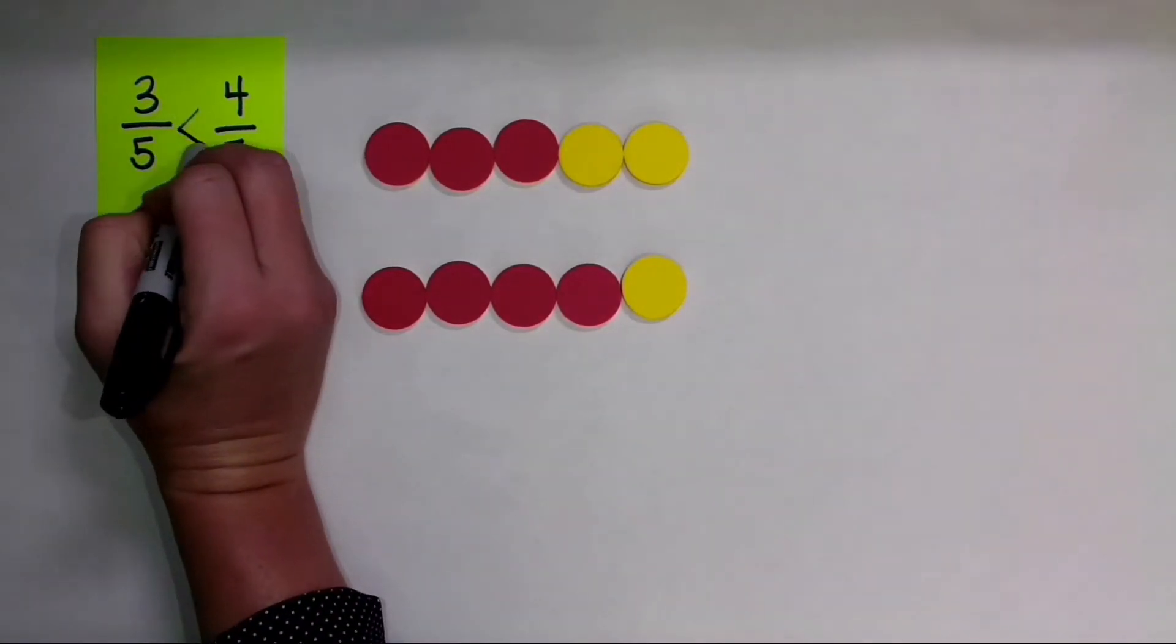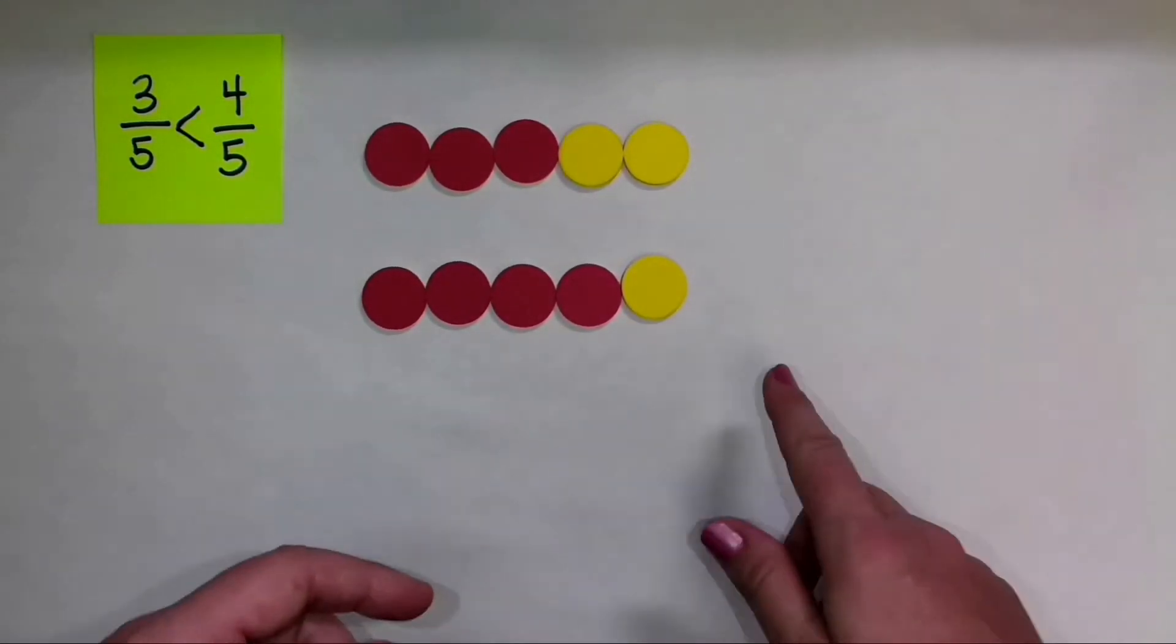So 3 fifths is less than, I'll go ahead and put my sign in there, less than 4 fifths.